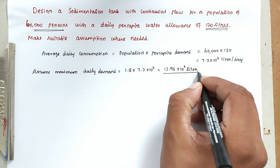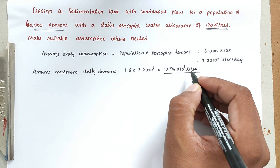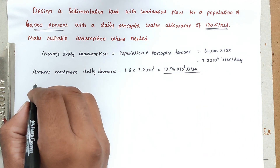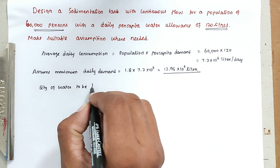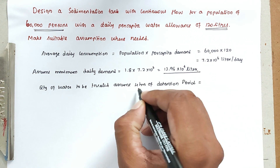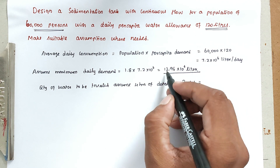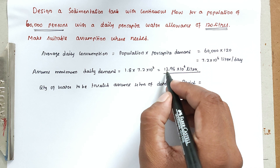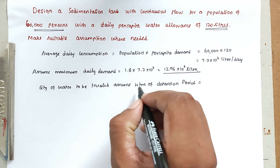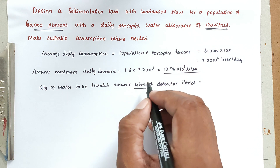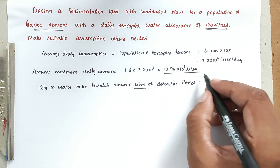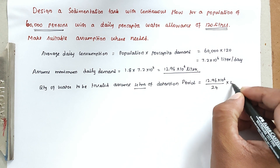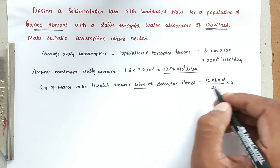The total wastewater generated is 12.96×10⁶ liters. Now we find the quantity of water to be treated for the respective detention time. We assume a detention period of 4 hours — we don't need the full daily capacity because the wastewater stays in the tank for only 4 hours. So we calculate: 12.96×10⁶ divided by 24, then multiplied by 4.